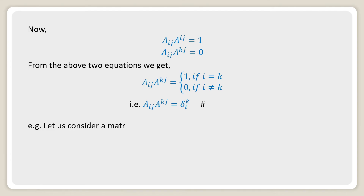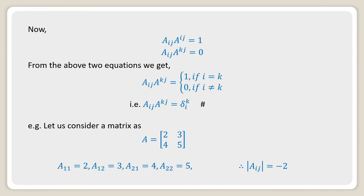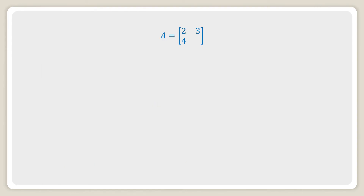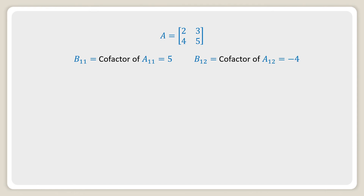For example, consider a matrix A equal to [2, 3; 4, 5]. Here A11 equals 2, A12 equals 3, A21 equals 4, A22 equals 5, and the determinant of Aij equals minus 2. Now finding the cofactors: cofactor of A11 is B11 equals 5, cofactor of A12 is B12 equals minus 4, cofactor of A21 is B21 equals minus 3, and cofactor of A22 is B22 equals 2.